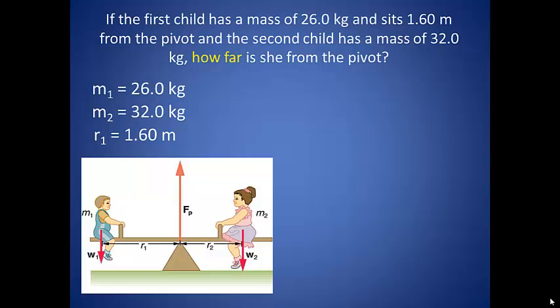So if the first child has a mass of 26 kg and sits 1.6 meters from the pivot, and the second child has a mass of 32 kg, how far is she from the pivot? Well, if the teeter-totter is balanced or in equilibrium, then both sides are even.